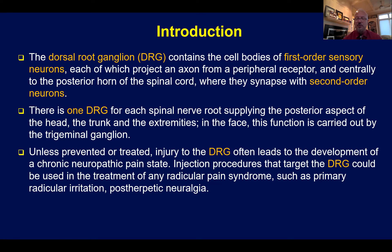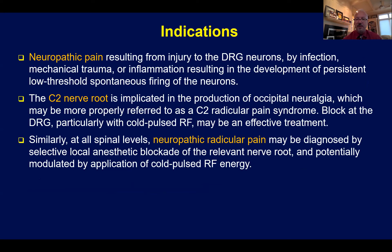Injury to a dorsal root ganglion can lead to a severe, unremitting, and recalcitrant pain of a neuropathic nature. Injection procedures which target the dorsal root ganglion can be used in the treatment of any radicular pain syndrome, such as primary radicular irritation, and other conditions which include post-herpetic neuralgia.